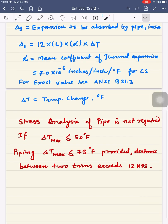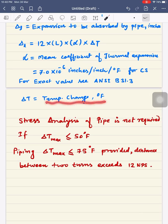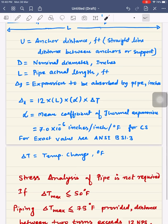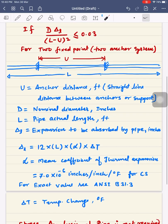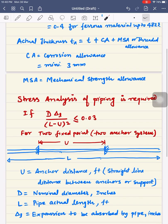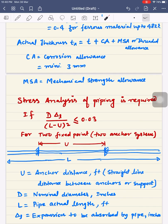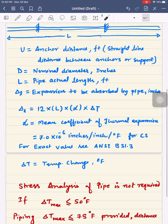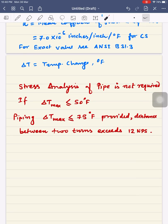Delta T is temperature change in degrees Fahrenheit for this formula. If you put all these values in this formula and it is coming less than 0.03, then stress analysis of the pipe section is required. If not, then not required.